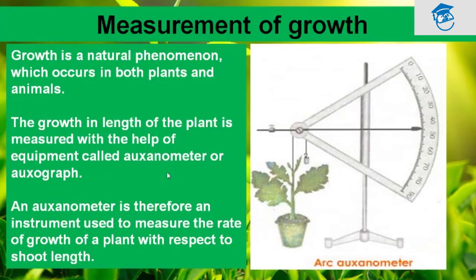Now, measurement of growth. Growth is a natural phenomenon occurring in both plants and animals. The growth in length of a plant is measured with the help of equipment which we call the auxanometer or auxograph. The auxanometer is an instrument used to measure the rate of growth of a plant with respect to the shoot length — the shoot is tied up with the auxanometer to measure growth in length.